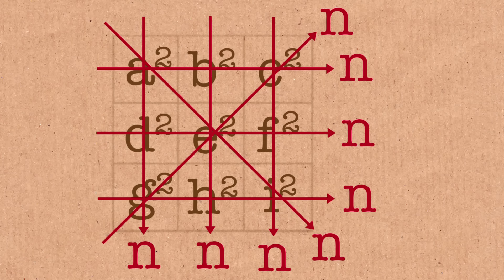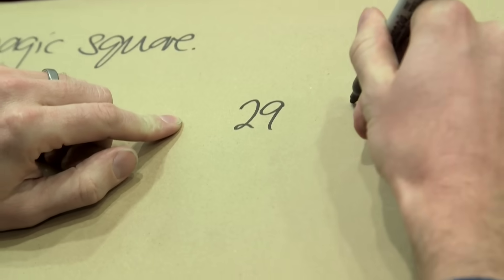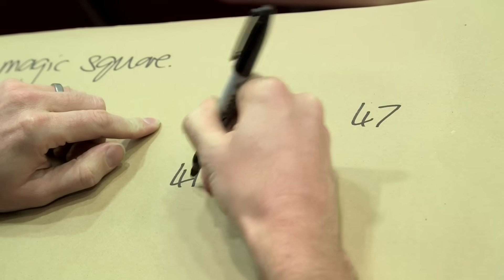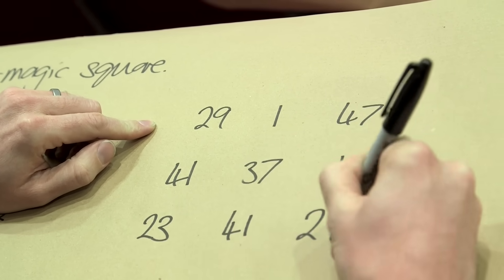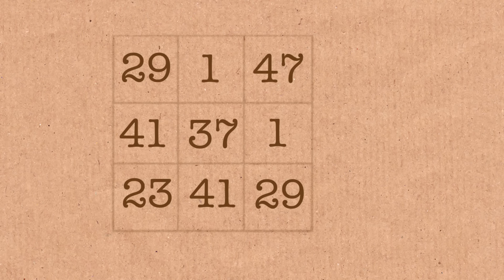Do you want to see what I found? Right, here's what I found: 29, 1, 47, 41, 37, 1, 23, 41, 29. Alright, so there's my fella.